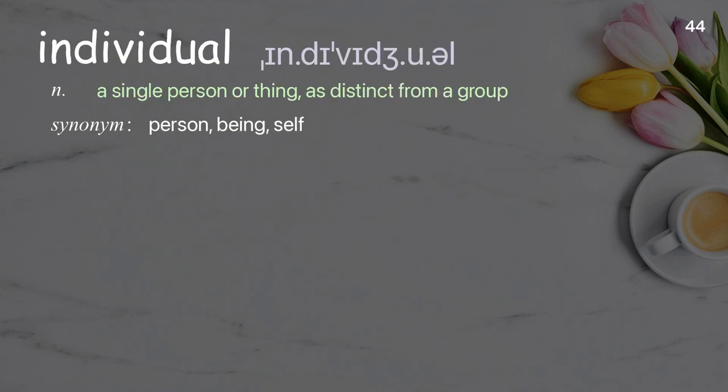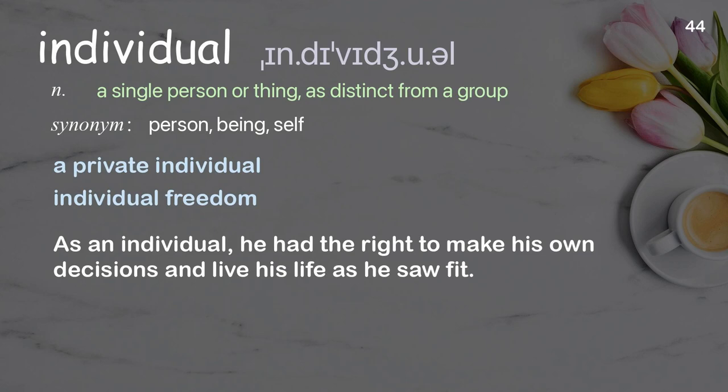Individual: a single person or thing as distinct from a group. Examples: a private individual, individual freedom. As an individual, he had the right to make his own decisions and live his life as he saw fit.